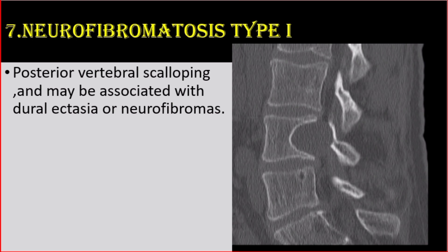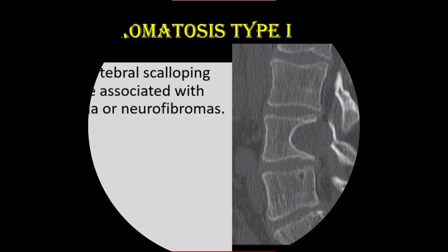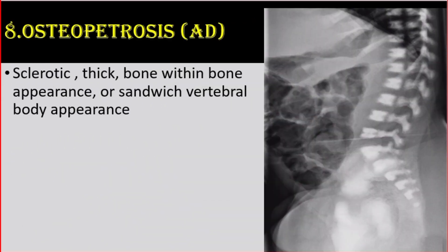Number 7: Neurofibromatosis type 1, in which there is posterior vertebral scalloping, and may be associated with dural ectasia or neurofibromas. Number 8: Osteopetrosis, autosomal dominant, in which there is a sclerotic, thick bone-within-bone appearance, or sandwich vertebral body appearance.